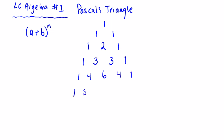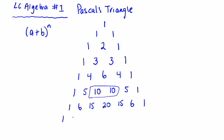Now we have 1, 4, 6, 4, 1. Then 1, 5, 10, 10, 5, 1. Then 1, 6, 15, 20, 15, 6, 1. Every second row we have a double number in the middle. Then 1, 7, 21, 35, 35, 21, 7, 1. I'm going to stop here with Pascal's Triangle and look at some questions on expansion and how it works with the triangle.